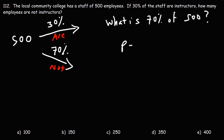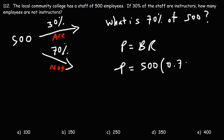This is a part equals base times rate problem. We're looking for the part. The base is 500 — that's the whole, or the number associated with the word 'of.' The rate is 70%, or 0.70. 500 times 0.70 is 350. So 350 of the 500 employees are not instructors.